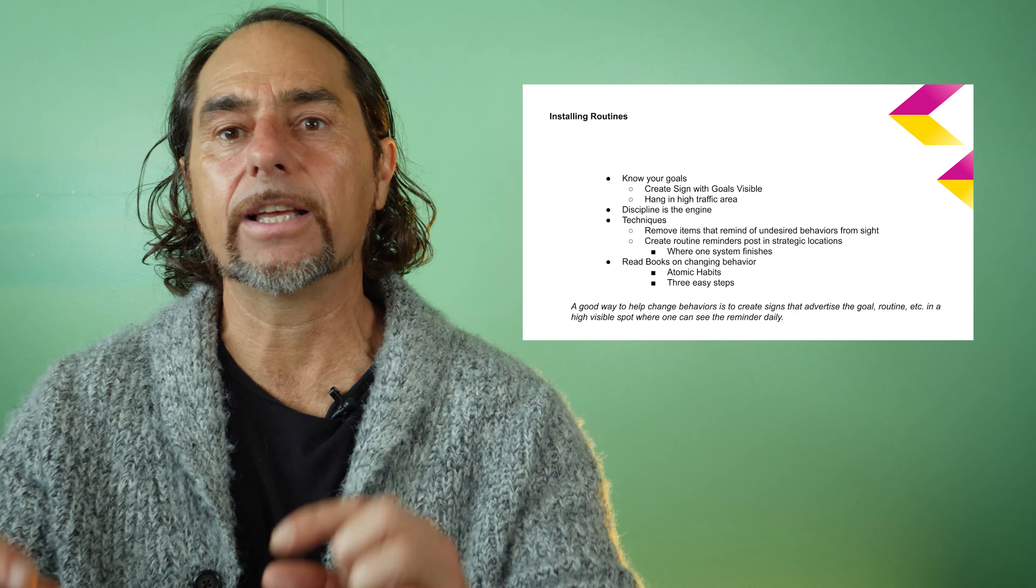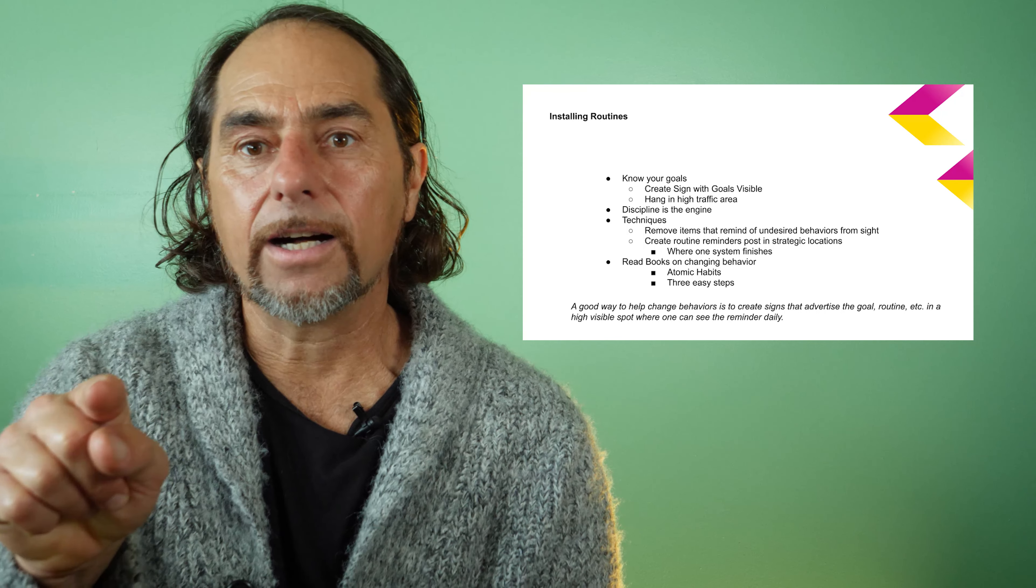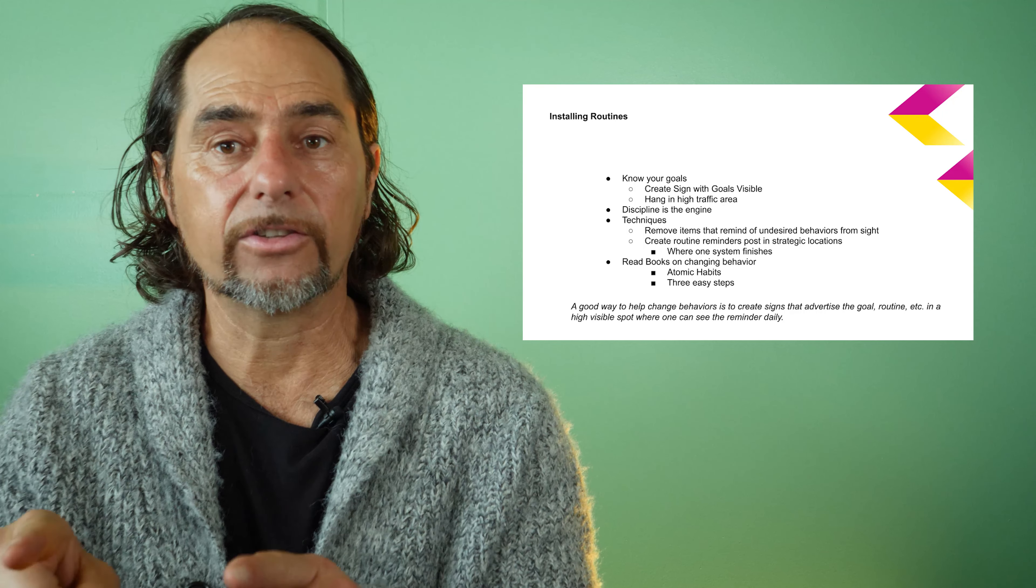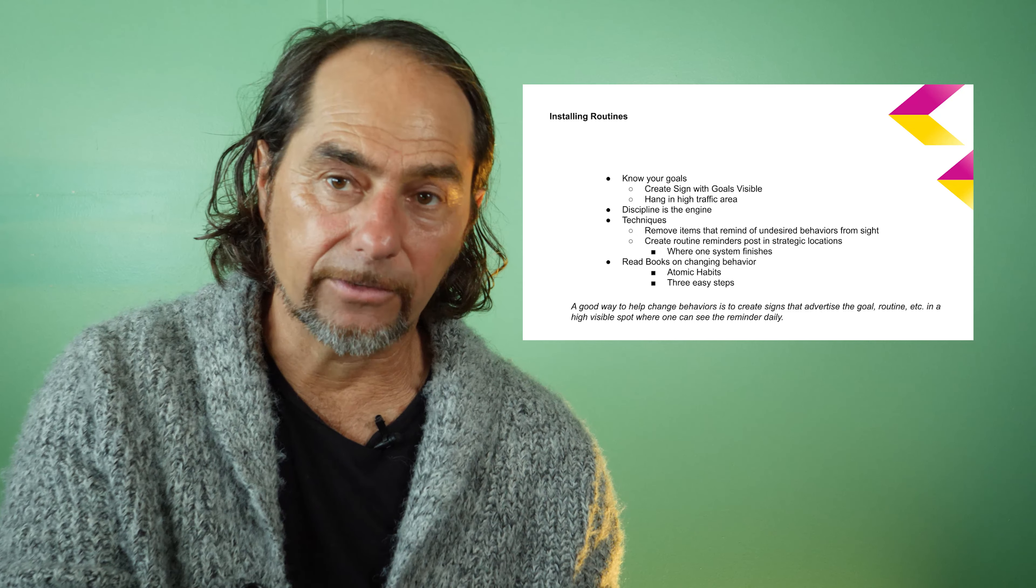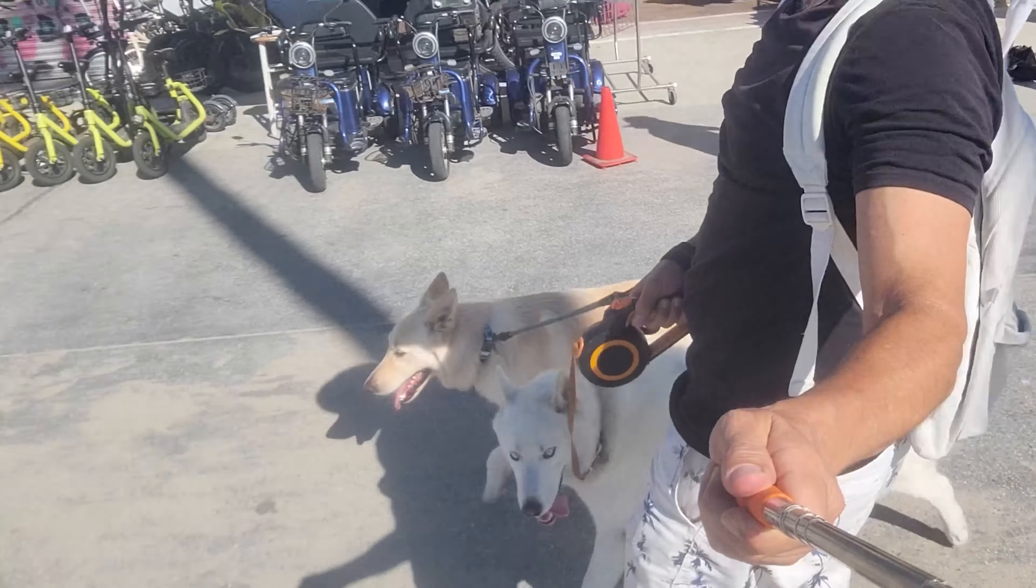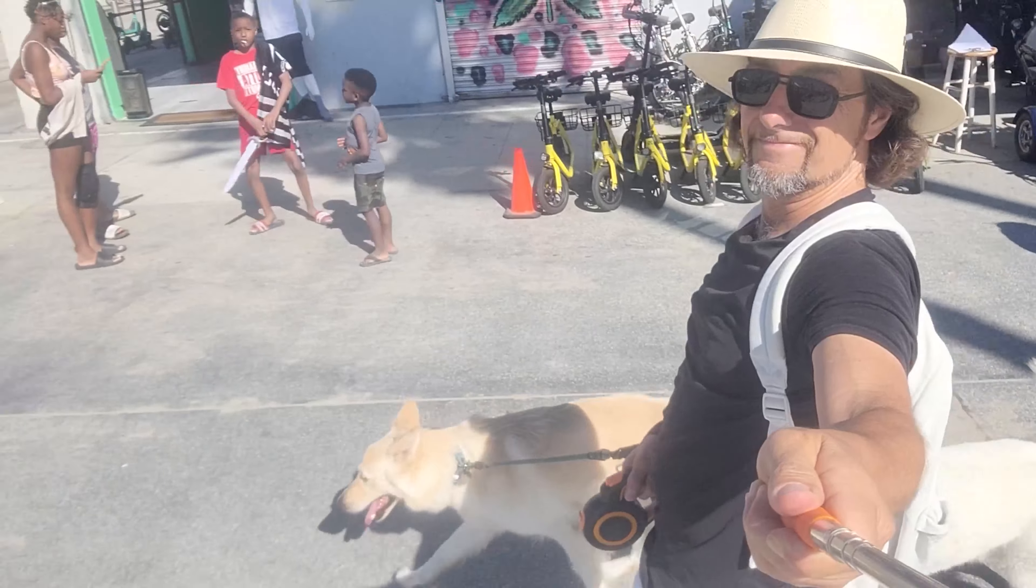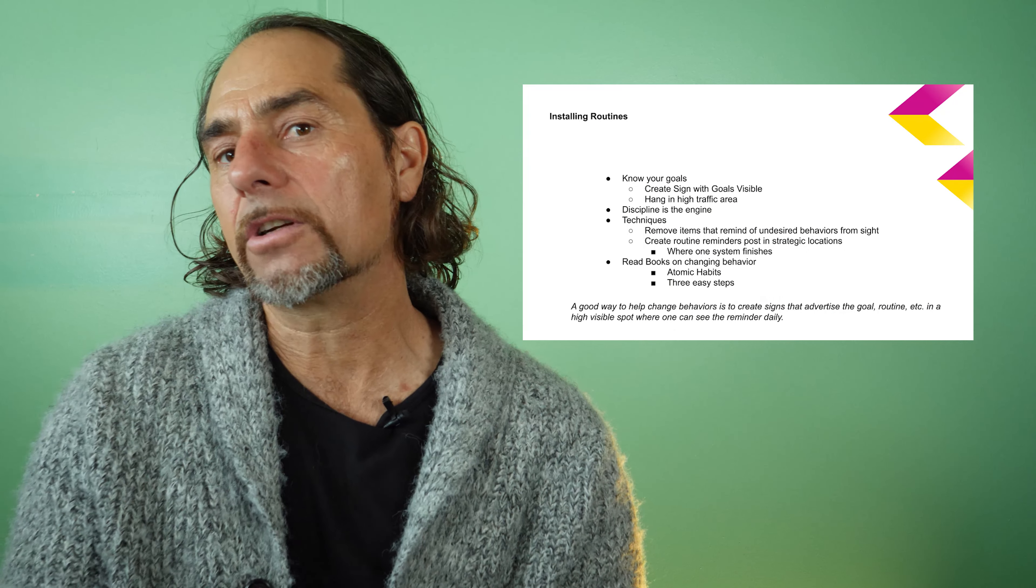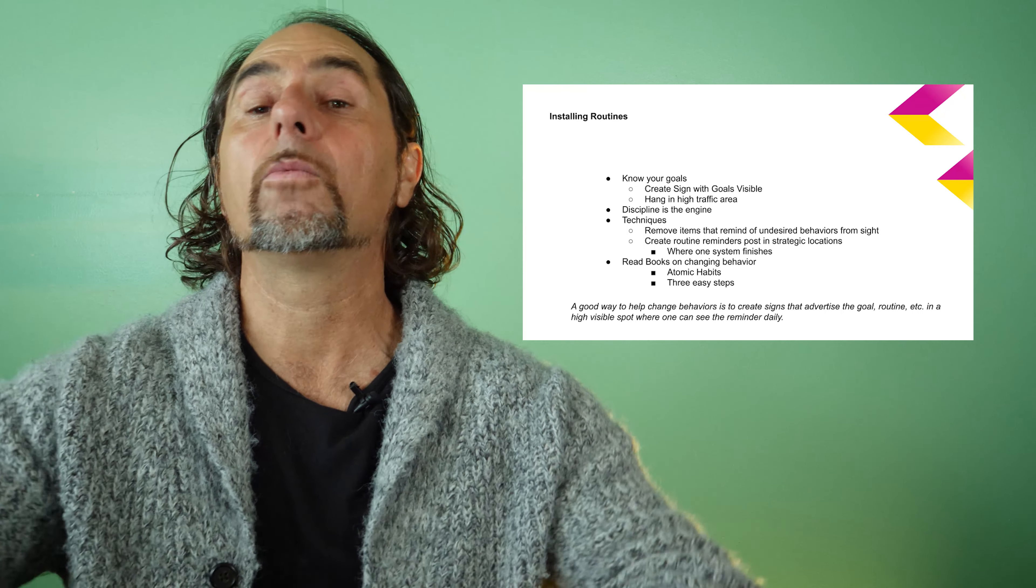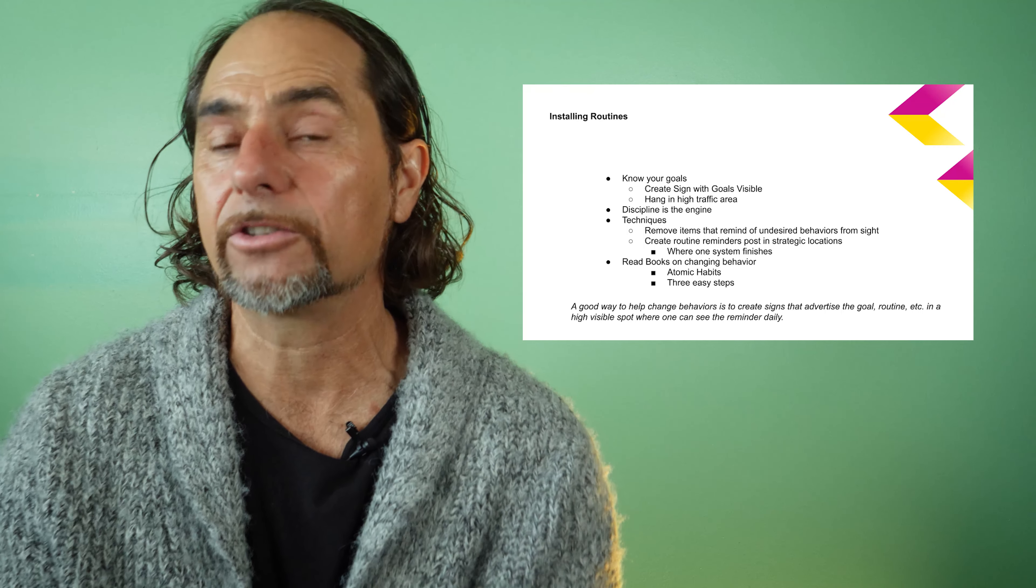So I may have a little slip that says 'walk dogs' and then it says 'after.' Remember, one routine, one system begins where the other one ends. So after I finish my journaling, then I go and walk my dogs. After I walk my dogs, I water my plants. And wherever I may finish journaling, I may place a sign in a high-visibility traffic area to remind me I have to go to the next system.